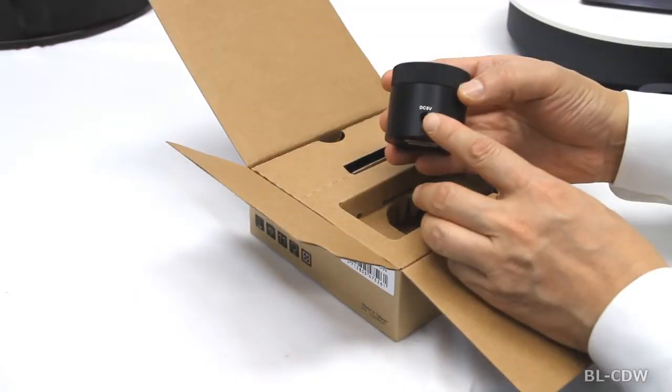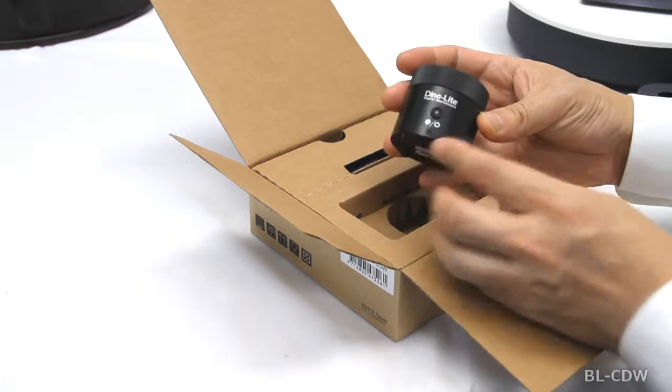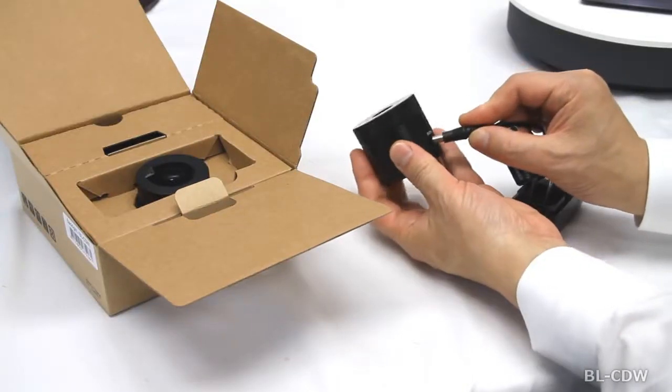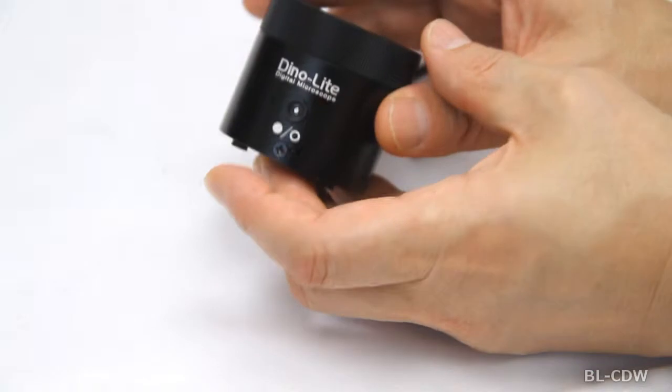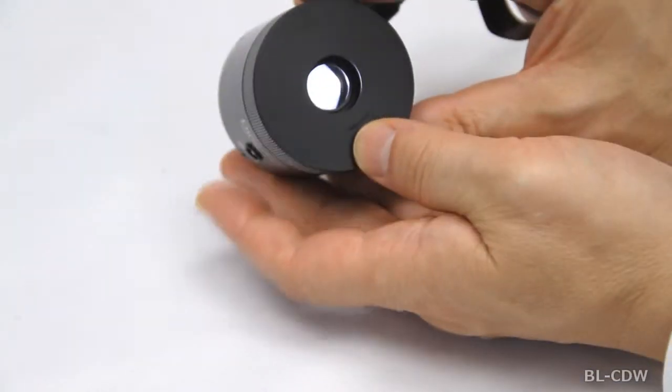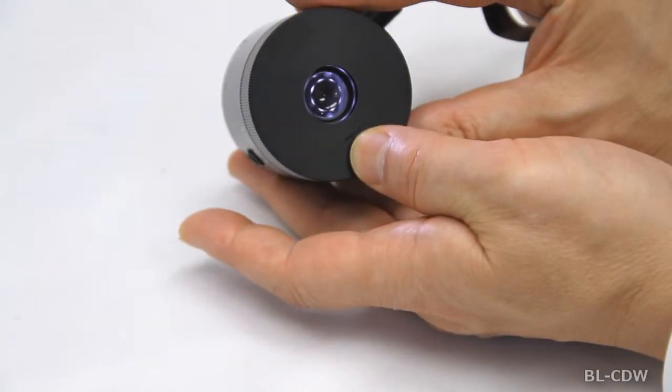This backlight illuminator is powered by the included AC adapter. The mode switch on the front of the BLCDW changes the output between bright field and dark field illumination.